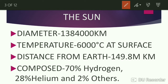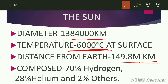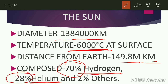Sun: the diameter of the sun is 13,84,000 km. The temperature at the surface of the sun is 6,000 degrees Celsius. Distance from Earth to the sun is 149.8 million km. Sun is composed of 70% hydrogen, 28% helium, and 2% other gases.